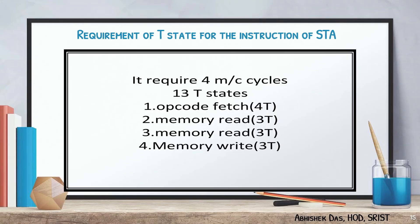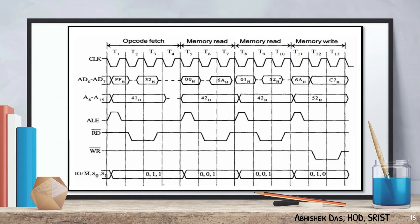Now we are going to calculate how many T-states are required in the STA 526A instruction. Total T-states required is 13: 4 for opcode fetch, 3 for memory read, 3 for memory read, and 3 for memory write. This is the timing diagram of STA 526A where 13 T-states are required — 4 for opcode fetch, 3 for memory read, 3 for memory read, and 3 for memory write. This is the timing diagram where all the signals are affected.